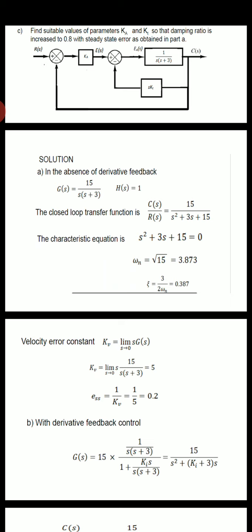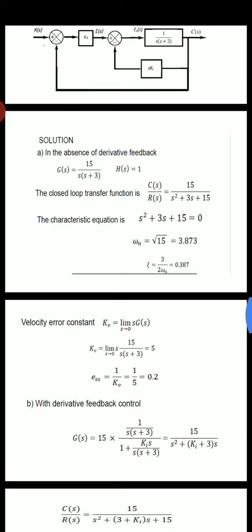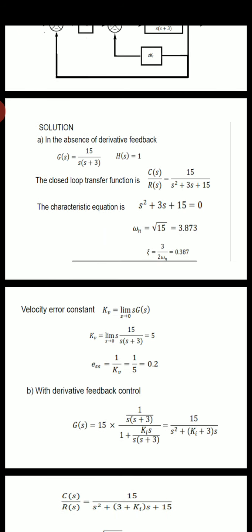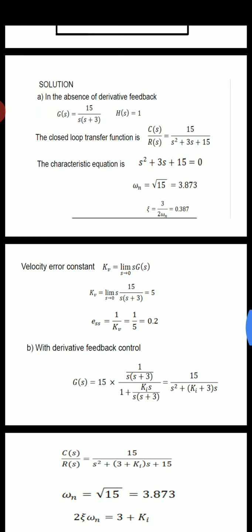Next, the velocity error constant kv = limit as s→0 of s·G(s) = limit as s→0 of s × 15/[s(s+3)]. The s cancels, giving 15/3 = 5. So kv = 5. The steady-state error ess = 1/kv = 1/5 = 0.2.